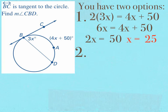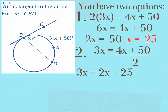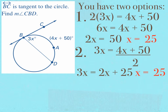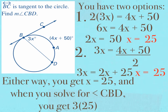My second option would be to leave my angle measure 3x alone, but take half of the arc length, 4x plus 50. That would be 3x equals (4x plus 50) divided by 2. Divide both 4x and 50 by 2, and you wind up with 3x equals 2x plus 25. To isolate your variable, subtract 2x from both sides, and you wind up with x equals 25. Now, we have solved for x, but we have not answered the question. We got x equals 25, but now I want to solve for angle CBD. Plug in 25 for x: 3 times 25, and your final answer would be 75 degrees for angle CBD.